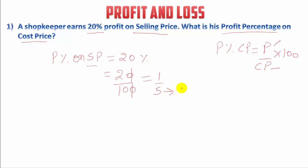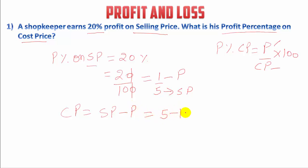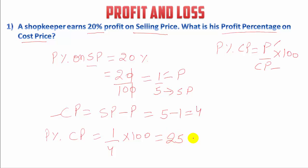So we can say that if 5 is the selling price, there is a profit of rupee 1. And we know cost price is equal to selling price minus profit. So cost price will be 5 minus 1, that is 4. Now we have the cost price and profit. So we can easily find the profit percentage on cost price. That will be 1 by 4 into 100, that is 25 percent. That is our answer.